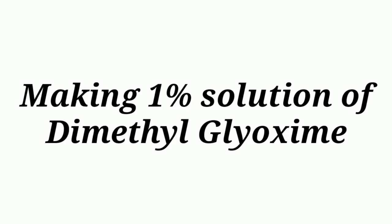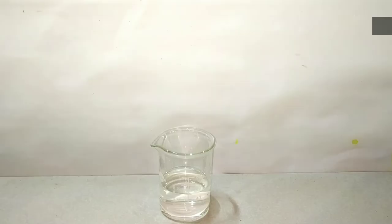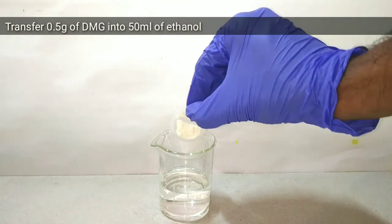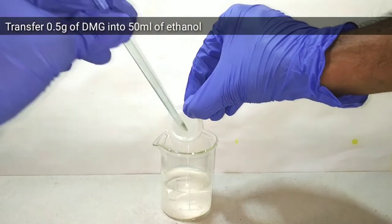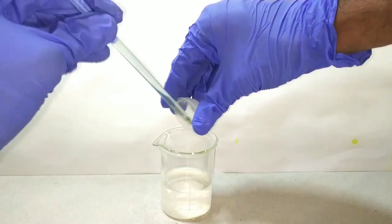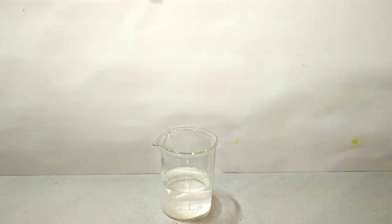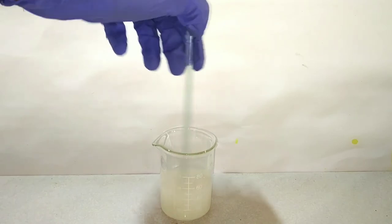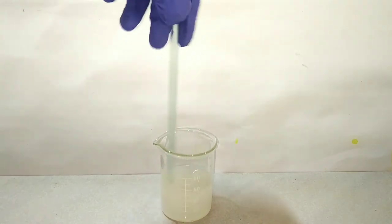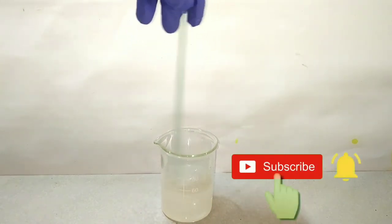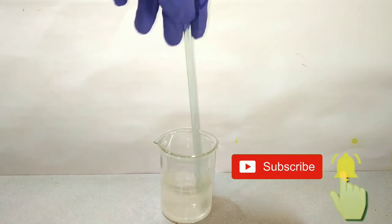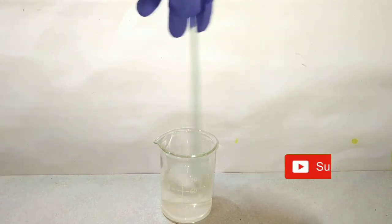Next we make 1% dimethylglyoxime solution. For that, transfer 0.5 grams of dimethylglyoxime into 50 milliliters of ethyl alcohol and mix well. Dimethylglyoxime is not very soluble in water, that is why we need the help of alcohol. After mixing it well, we get a clear solution.